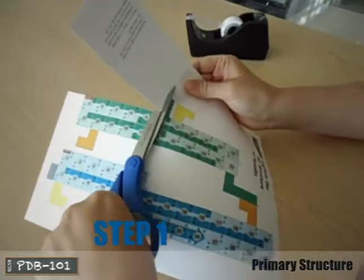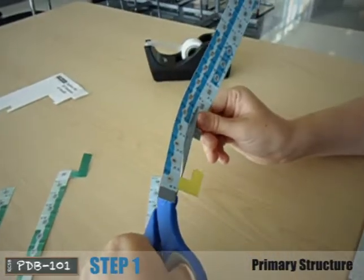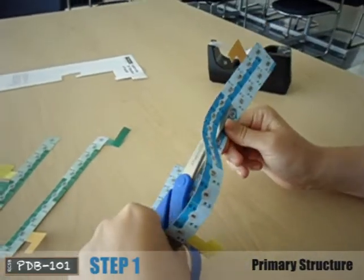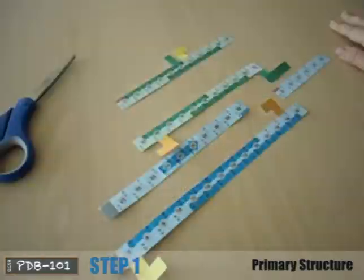Cut out the five strips on the dotted line. Make sure to separate the conjoined strips. The green, orange, and yellow tabs have to remain attached to their respective strips.